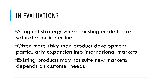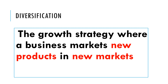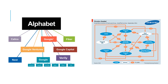The final strategy is diversification — where the business tries to grow by selling new products in new markets. For example, Alphabet, the company that owns Google, has a number of different products: glasses, the Google search engine, Google Fiber, and many more. They develop these products and sell them across a range of different markets.